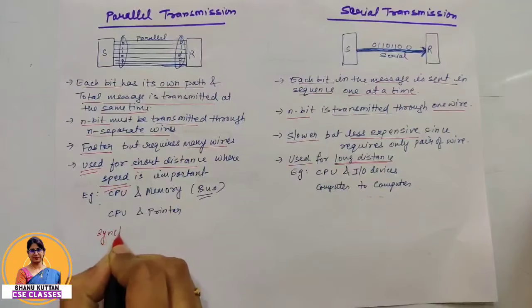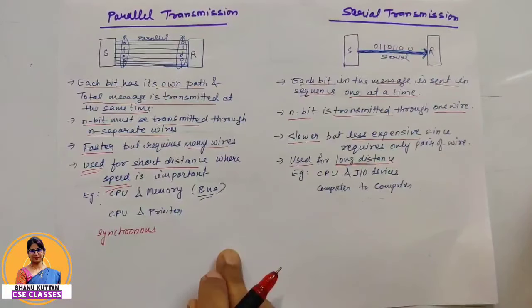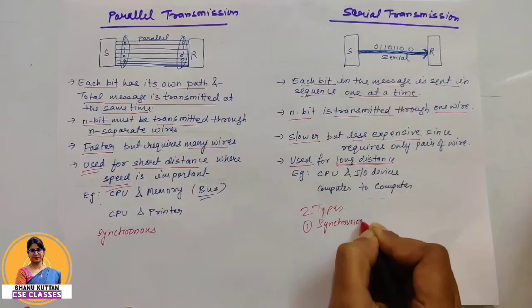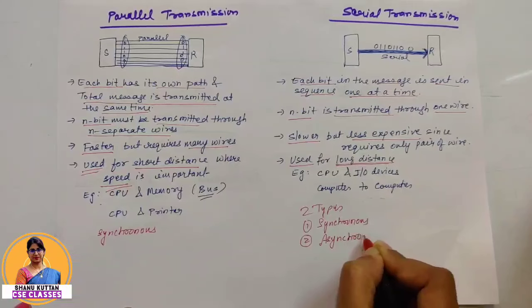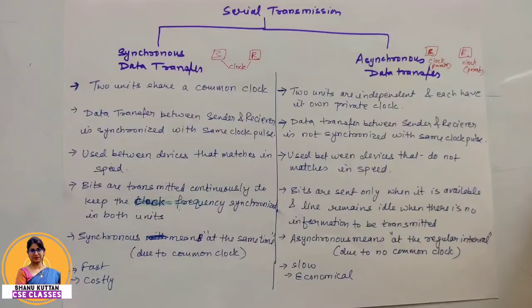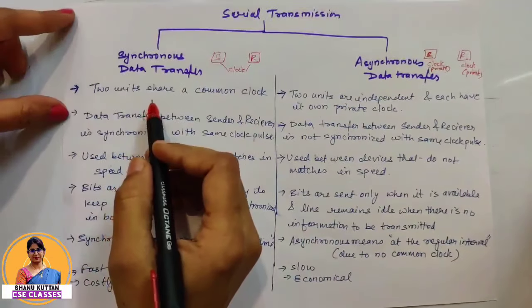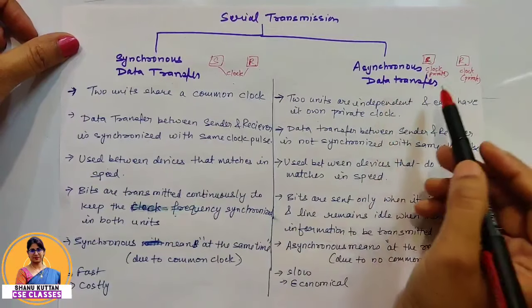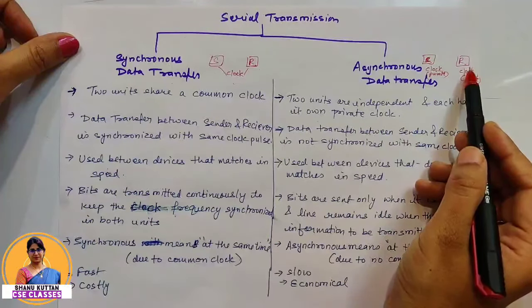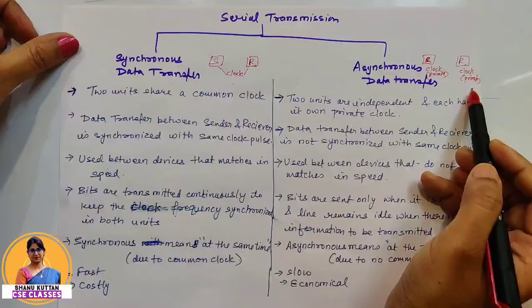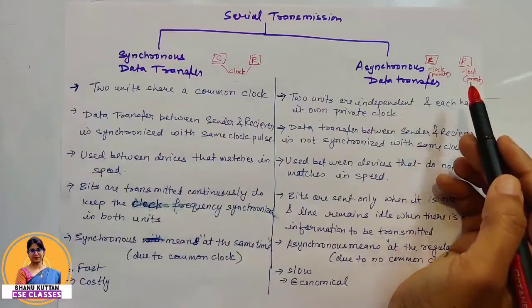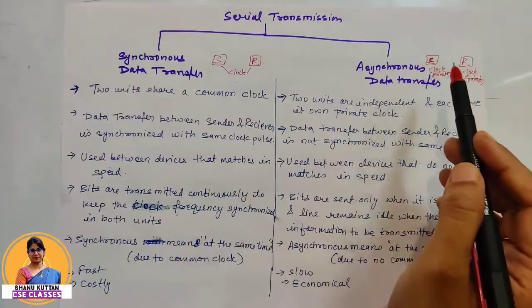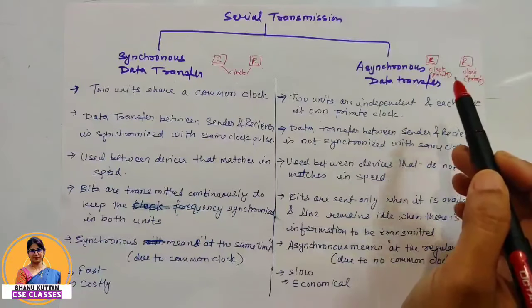Parallel transmission is always synchronous because the sender and receiver clocks are synchronized. Serial transmission has two types: synchronous and asynchronous. In synchronous data transfer, the sender and receiver share a common clock. In asynchronous data transfer, the sender and receiver do not share the same clock — each has its own private independent clock. Two devices are synchronized when they have a common clock, and asynchronous when they have their own private clocks.